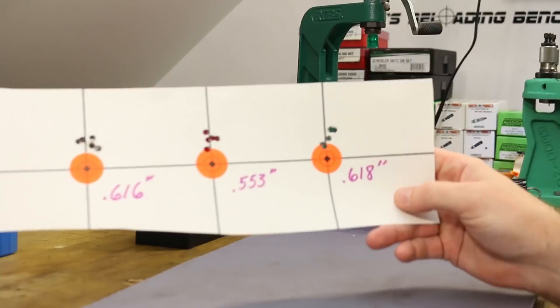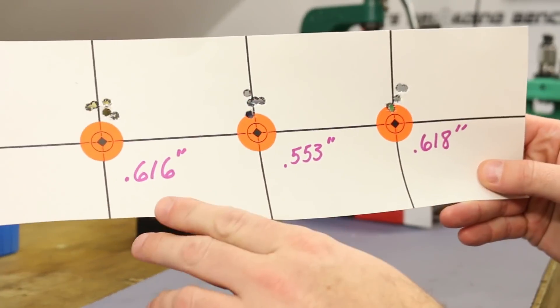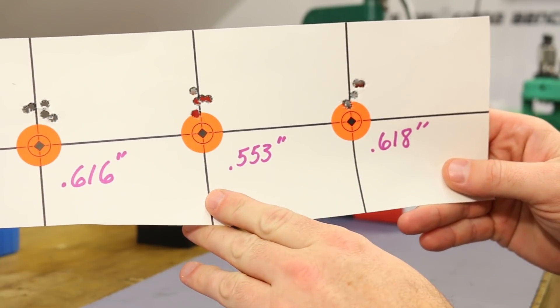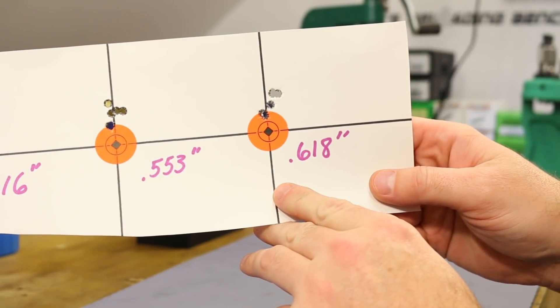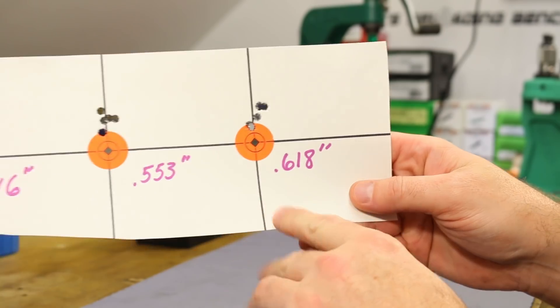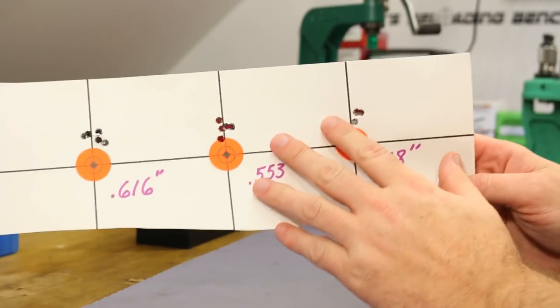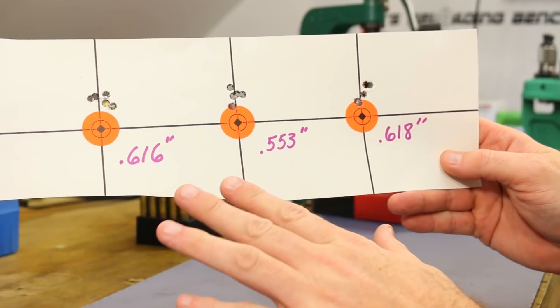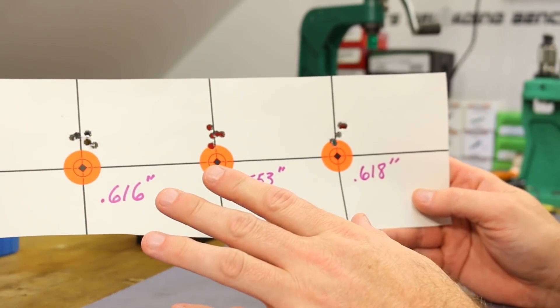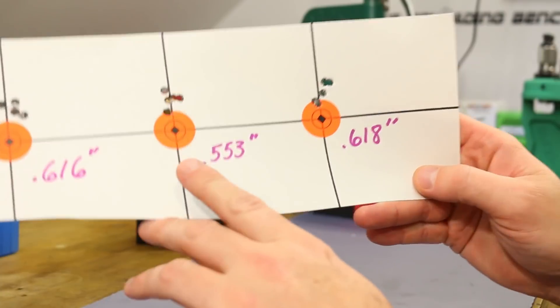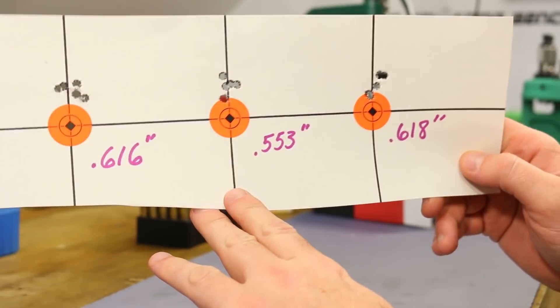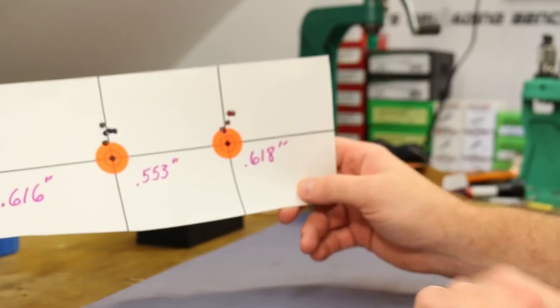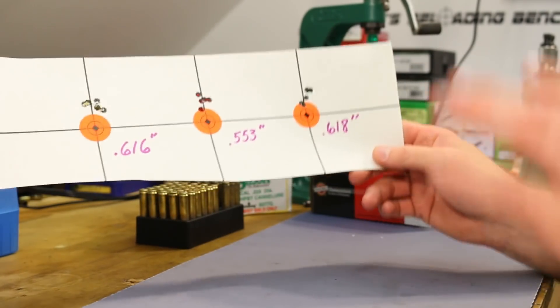All right guys, this is crazy good, this is stupid good. First 5 was a 0.616, second 5 was a 0.553, last 5 was a 0.618. This is really good shooting, brother. That 0.5 barrier seems to be a barrier for me. What we're basically looking at is as good as I can shoot from the prone with a rear bag and a bipod. But this gives us a good goal to shoot for.